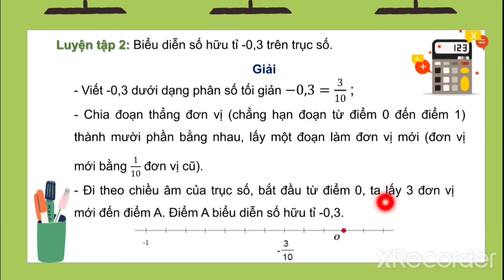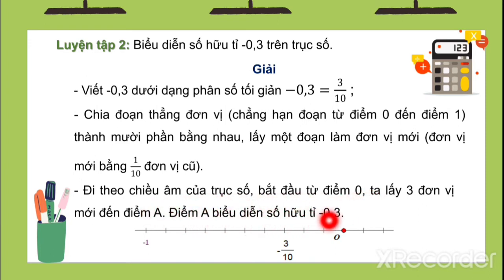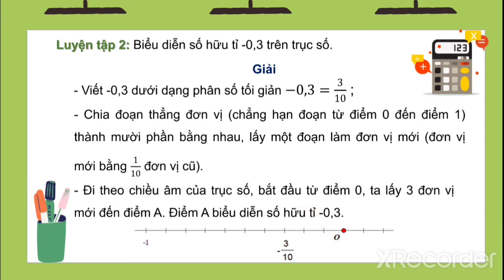Lưu ý: Đây là số 0, đây là âm 1. Ta lấy từ 0 đến âm 1 là 10 phần bằng nhau. Ta đếm từ 1 phần, 2 phần, 3 phần. Như vậy ta sẽ được là âm 3 phần 10.